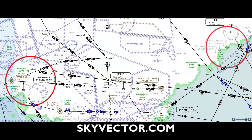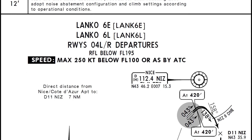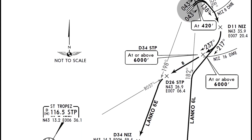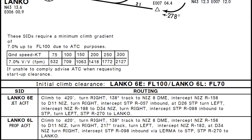Marseille is to the west of Nice. Note the intersection named Lanco and the Marseille VOR/DME frequency, which is 108.8. Standard instrument departure routes, or departure procedures, are published flight procedures followed on an IFR flight plan. We will use the Lanco 6E chart. This procedure departs from runway 04 climbing to 6000 feet and continues west towards Lanco. We will use a climb rate of 700 feet per minute with a target altitude of 6000 feet.